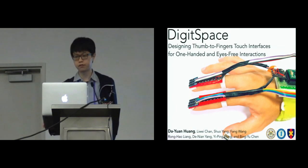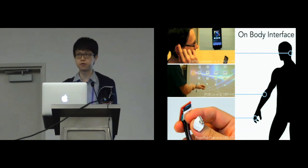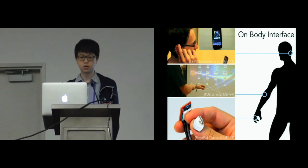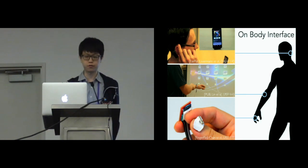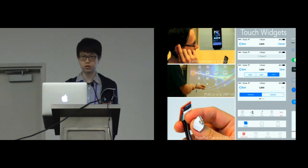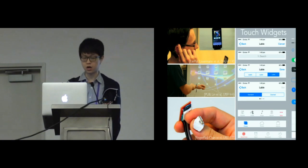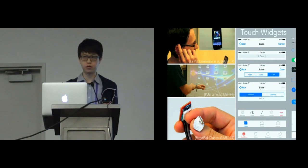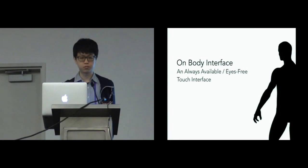Let's talk about on-body interfaces first. We know it transfers human skin into touch interfaces, therefore we could engage our fingers on the skin — on ears, on forearms, on our finger pads, or on other body locations. It actually augments touch widgets on our fingers and skin, allowing users to manipulate them by fingers, performing always-available and eyes-free touch interactions.